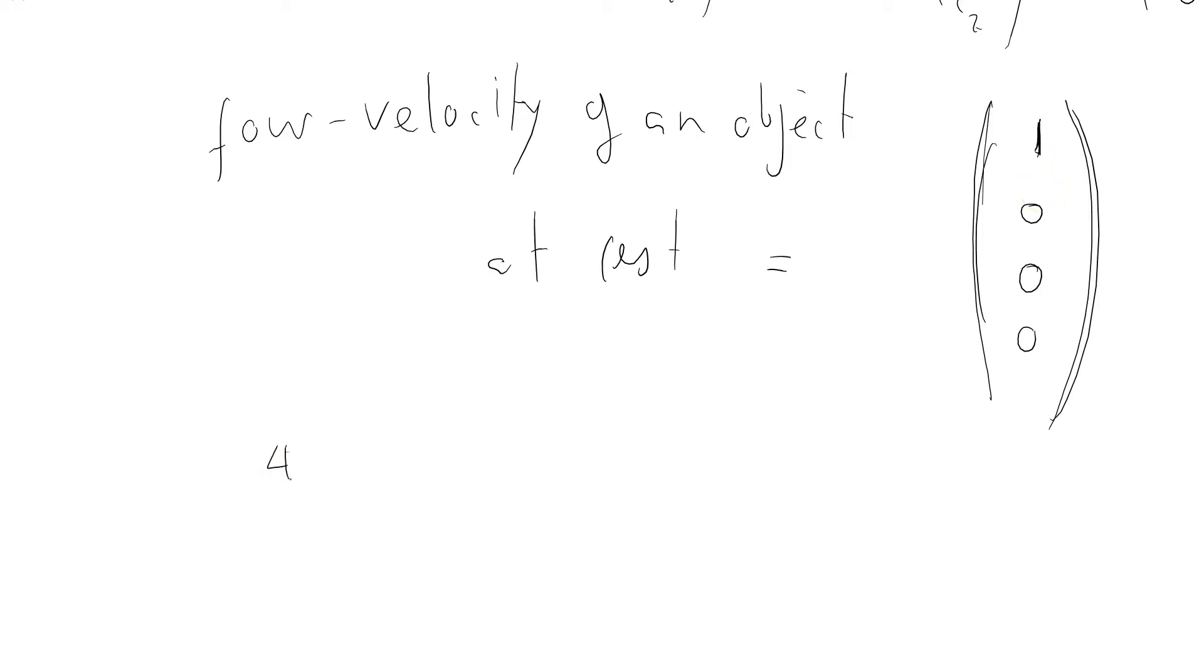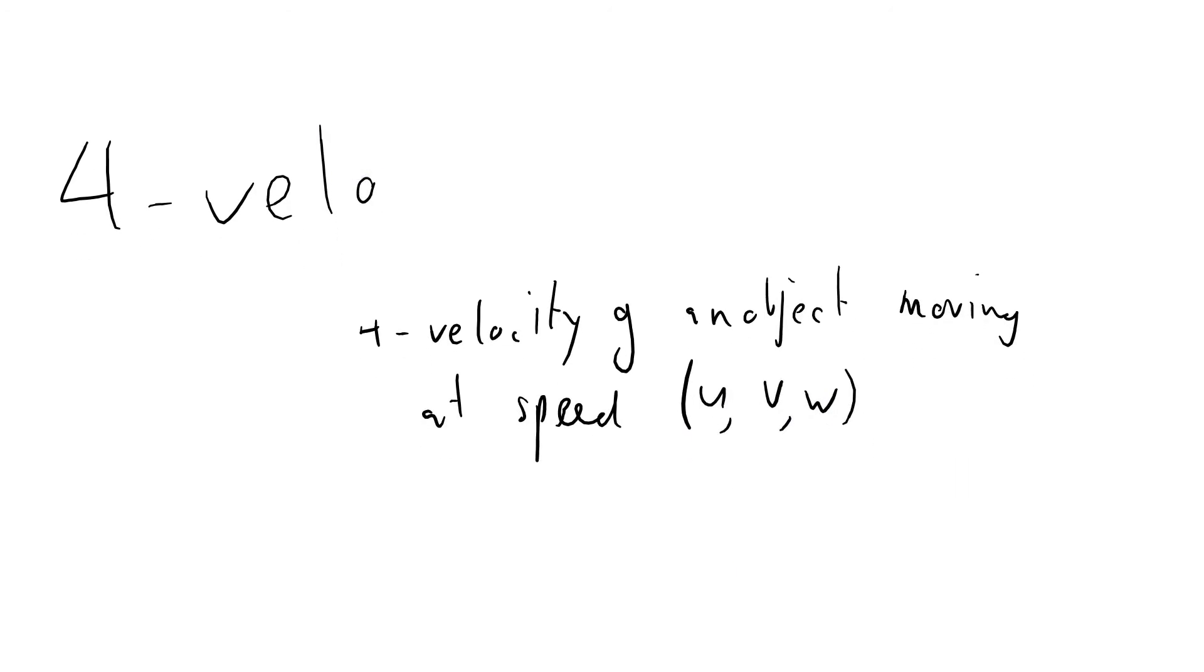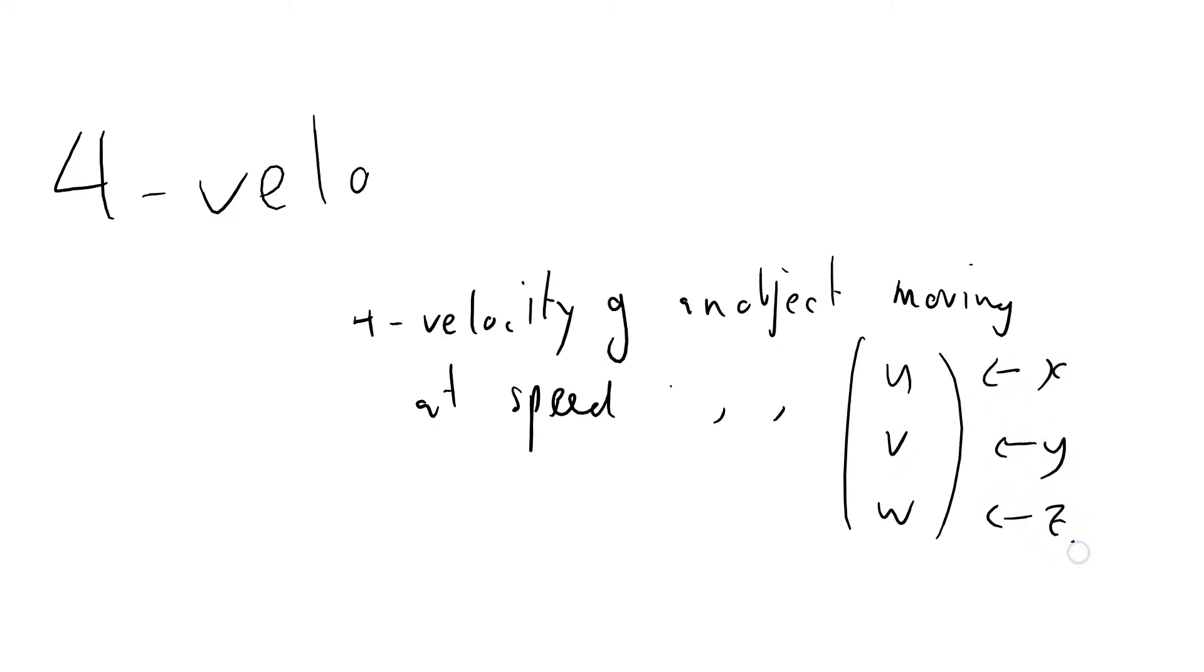Now I'm going to work out the 4-velocity of an object moving at speed u, v, w. Three components. I guess that should be a column vector, really. u, v, and w. So it's speed in the x-direction, speed in the y-direction, and speed in the z-direction.